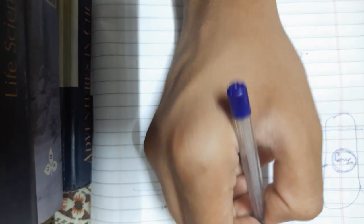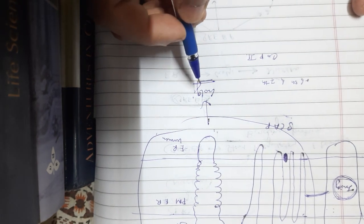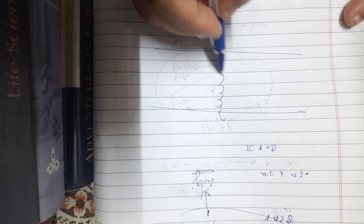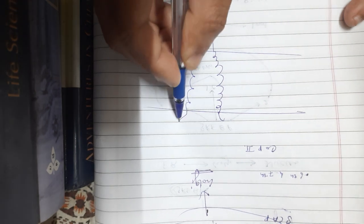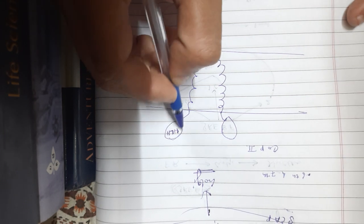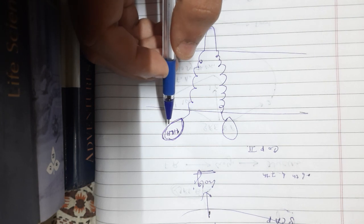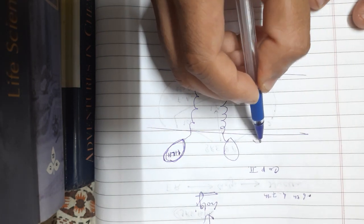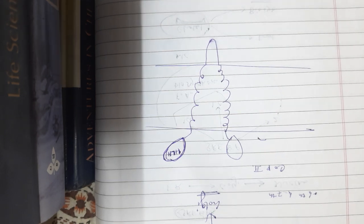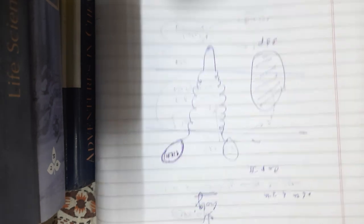Since SCAP binds to COP2 and is also bound to SREBP, this whole structure moves to the Golgi. In the Golgi, the right-side part of SREBP — the helix-loop-helix domain — is the transcription factor portion. In the Golgi there are two other proteins, and one of them is known as S1P, or Site 1 Protease.